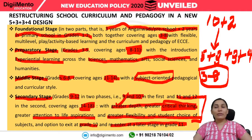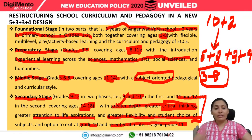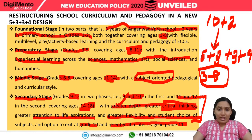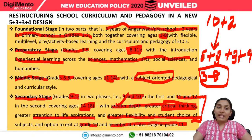If you look at the requirements of the recruiter or examiner versus what students study in schools, there is no match. Whatever is learned in school is not useful to a larger extent when giving examinations. The government wants children to be prepared for the demands of the industry, which is why critical thinking, greater attention to life aspirations, greater flexibility, and student choice of subjects will be given. After 10th standard, students also have the option to exit and re-enter at a later stage.